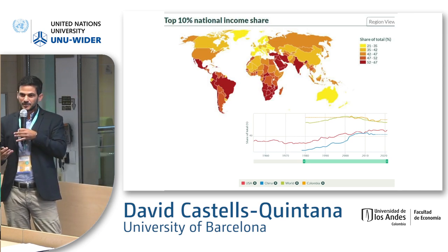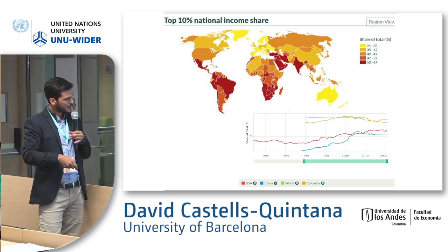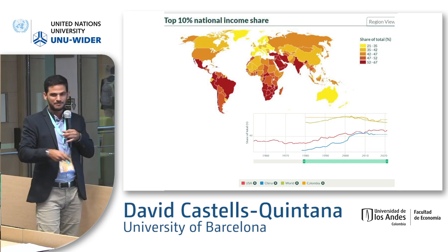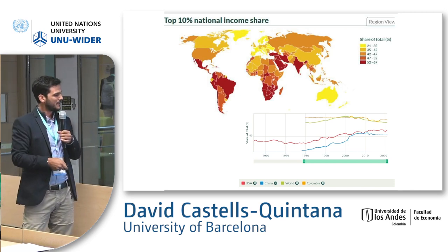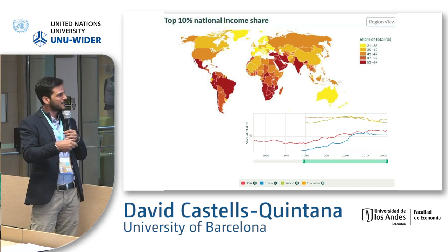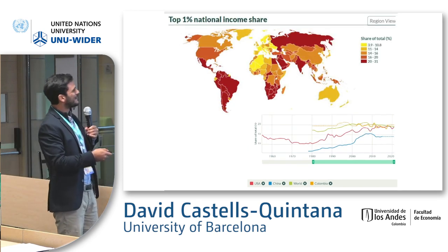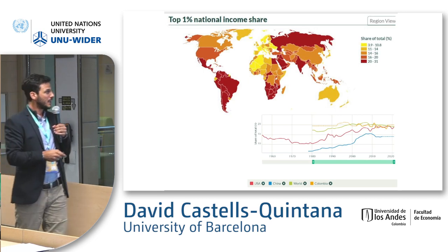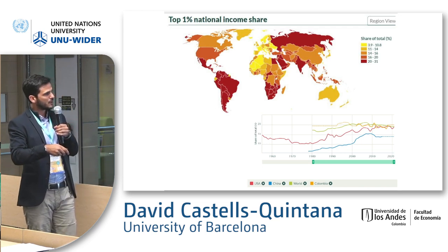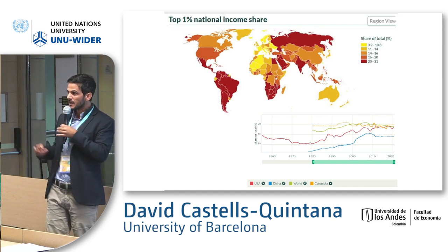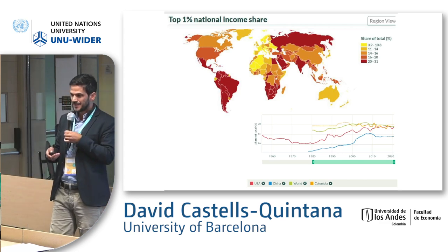When we talk about top incomes, I played with this data online — I selected the US, China, the world, and Colombia. You can see Colombia is like champions up there. I selected these because the US is one of the countries where the data is starting to show this concentration. Looking at the top 1% — again, Latin America is red, red. The top 1% is taking, in all of these countries, more than 20% of total income. That's quite a lot, and Colombia is at the top of the ranking.